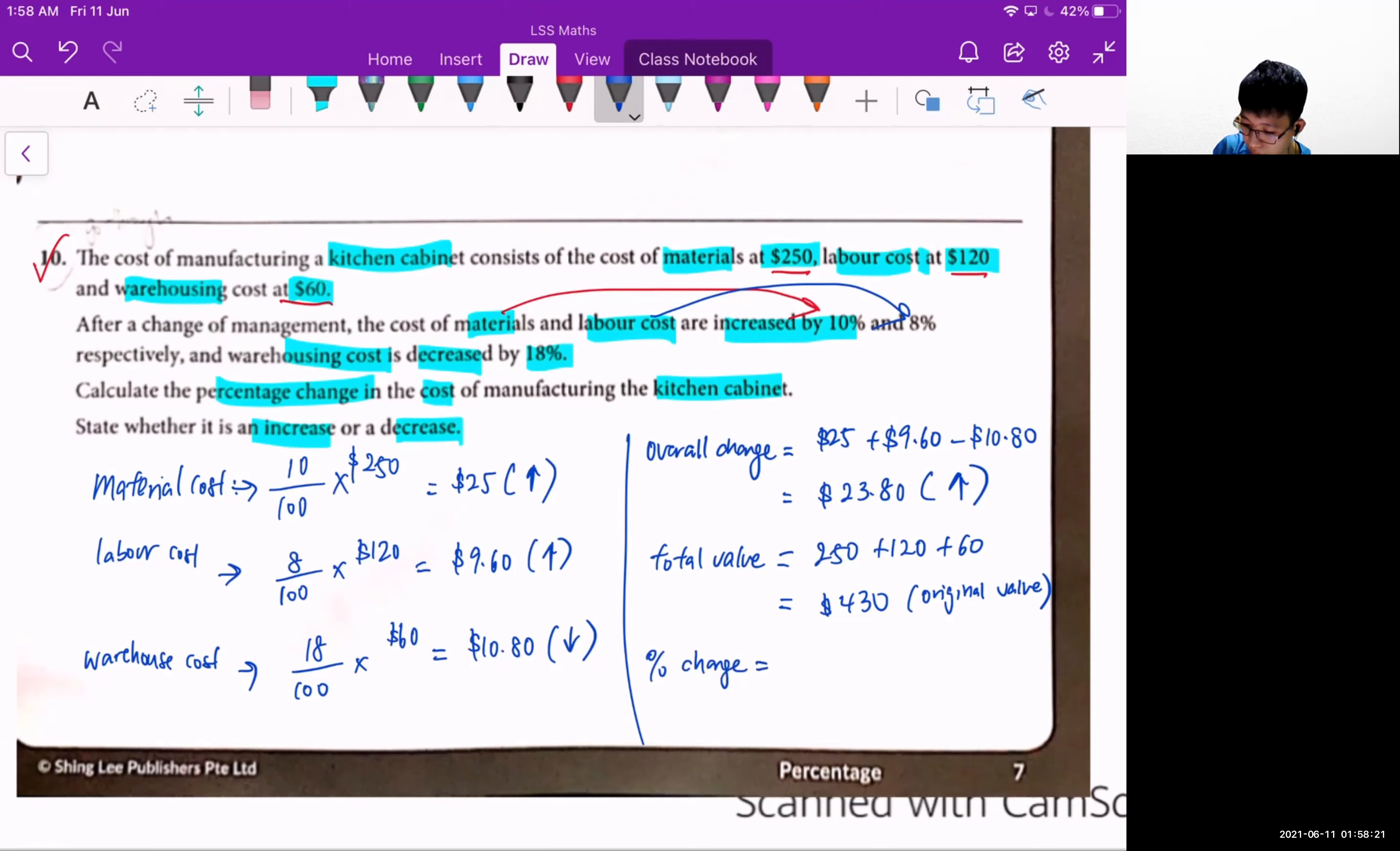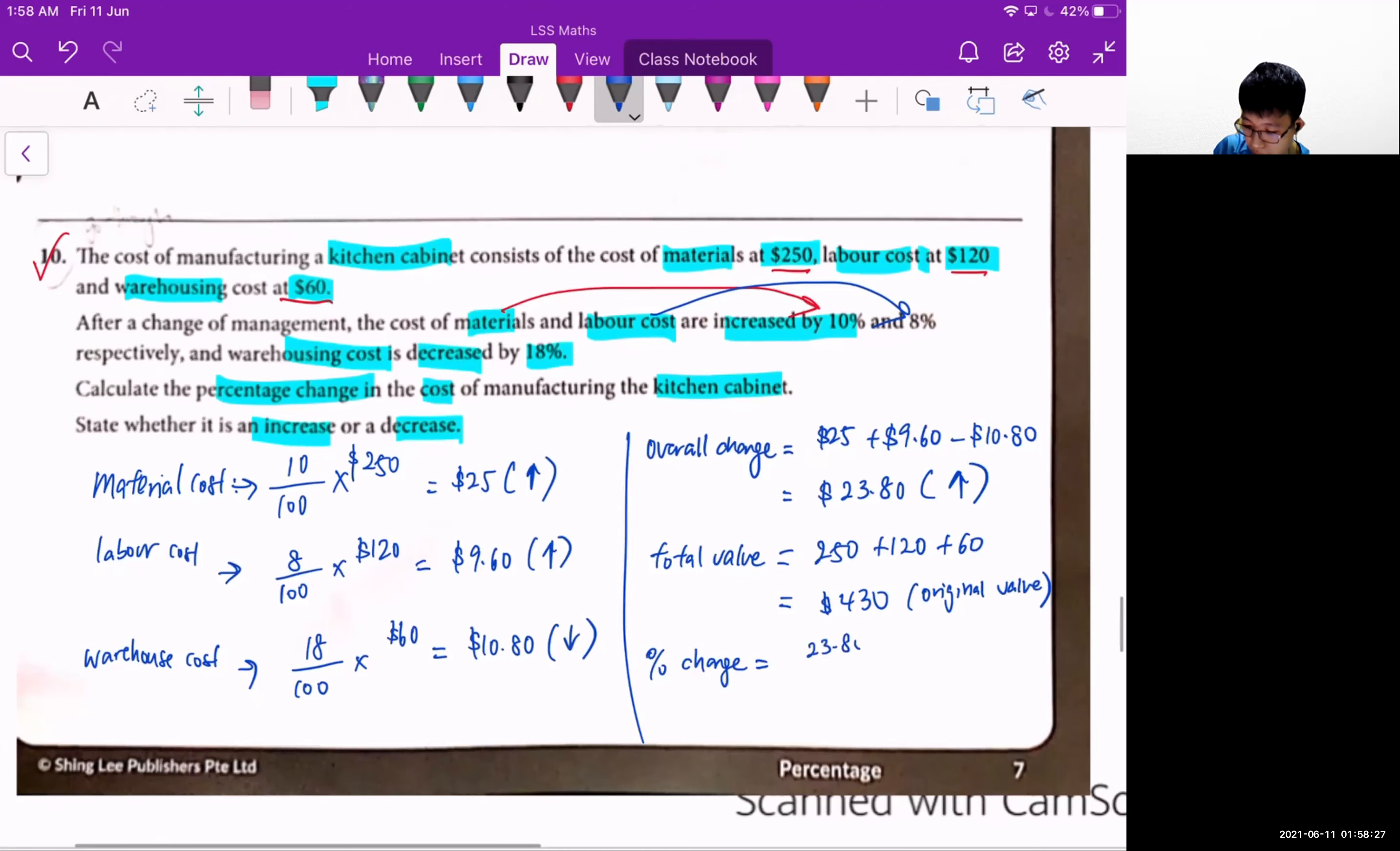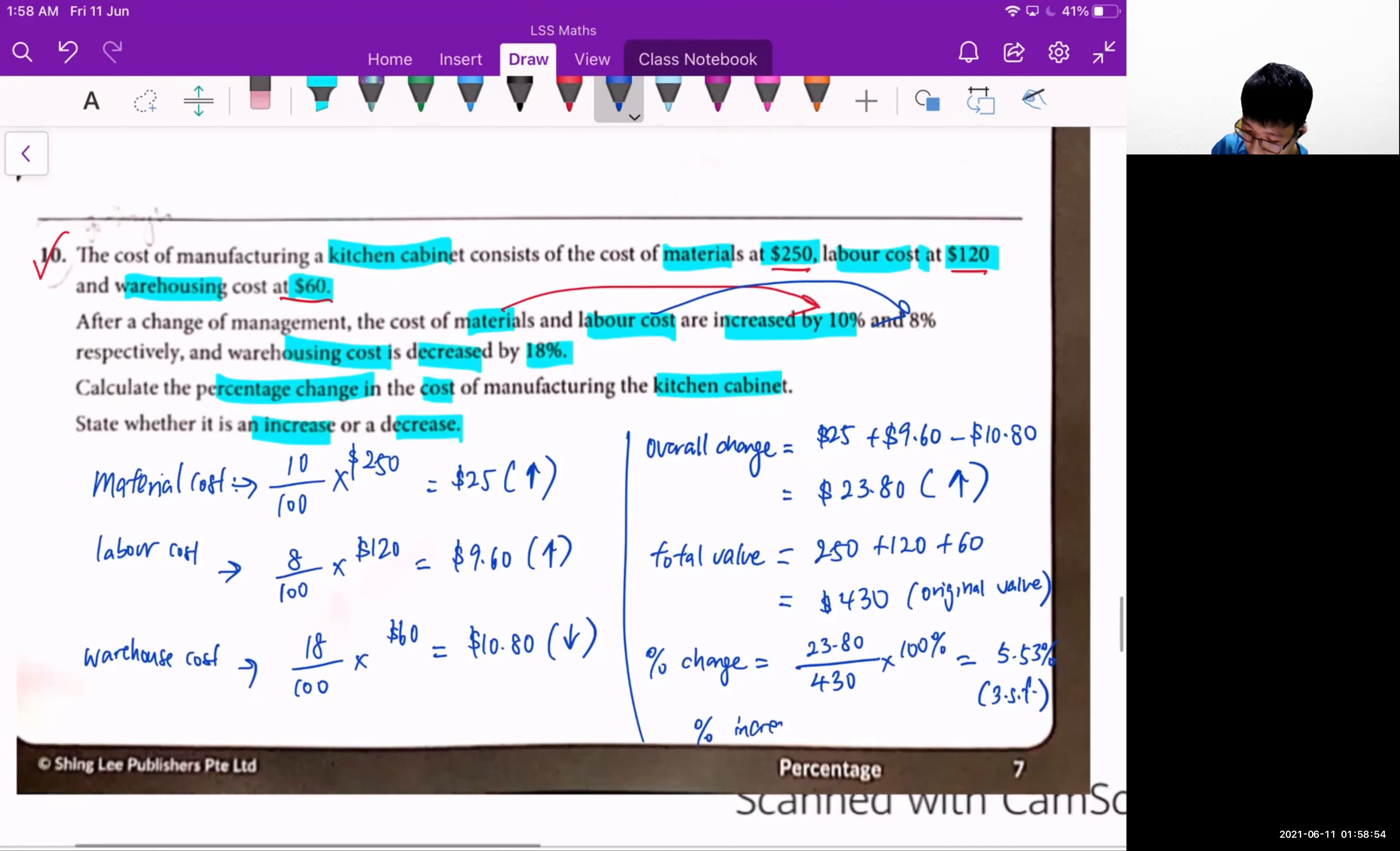I'll take the increase in value, which is $23.80, over the original value which is $430 times 100%. When I calculate, there's a percentage increase of 5.53%. You can leave it to 3 significant figures. So my percentage increase will be 5.53%. This is my final answer.